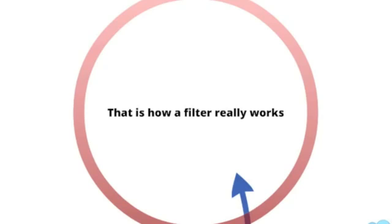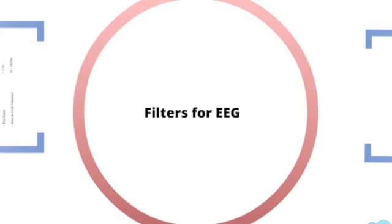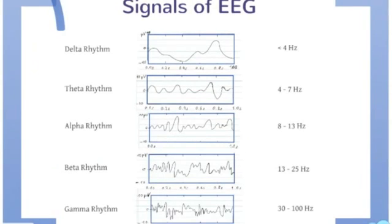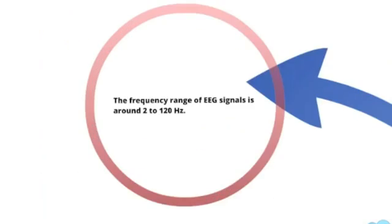Knowing the theory is good, but we also want to apply our theory in the real world. Let's consider some applications of filtering in different physiological measurements. First, the application of filters in EEG or electroencephalography. Let's consider the most common signals of EEG. Note that the frequency range of the EEG is from about 2 to about 120 Hz.